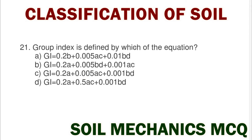Next question: the group index is defined by which of the equations? Option A: GI = 0.2B + 0.005AC + 0.01BD. Option B: GI = 0.2A + 0.005BD + 0.001AC. Option C: GI = 0.005AC + 0.001BD. The correct answer is option C: GI = 0.005AC + 0.001BD.